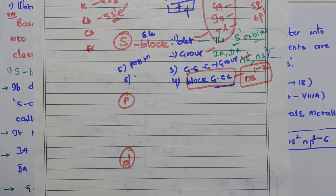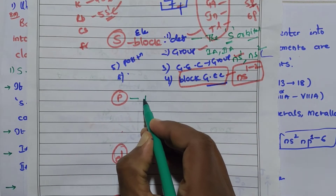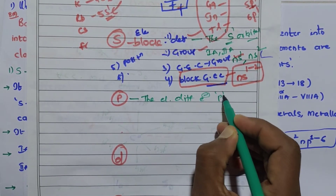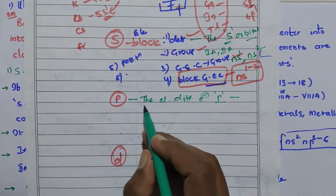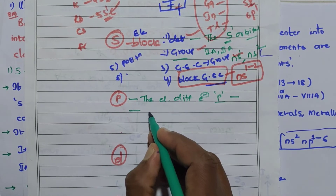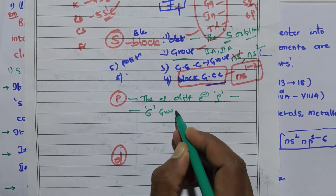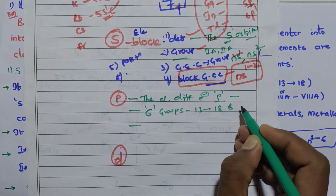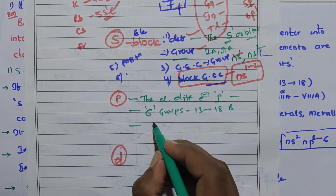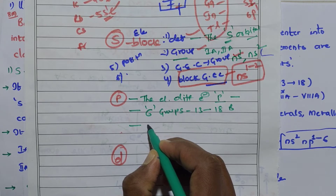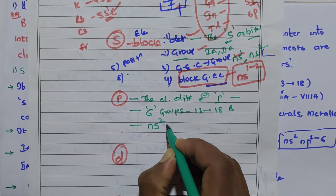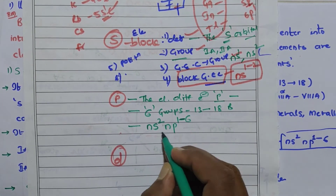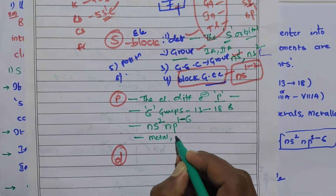The definition of p block is: the elements in which the differentiating electron enters into the p orbitals are called p block elements. There are 6 groups — from group 13 to group 18. The groups include the boron family through the helium family. The general electronic configuration is ns2, np1-6.